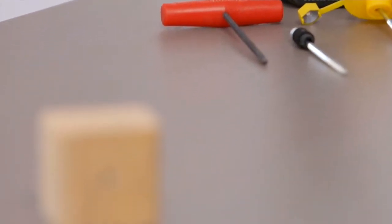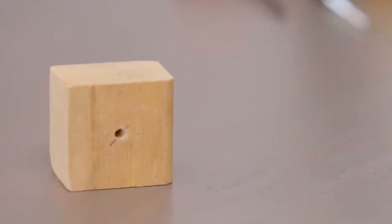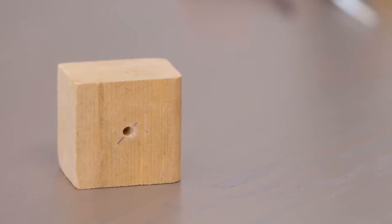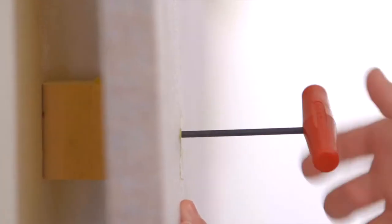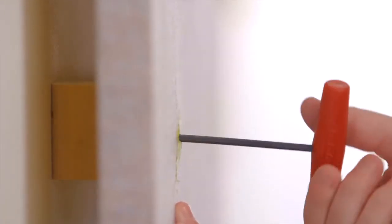This standoff is made from a 2x2x1.5 inch wooden block with an 1.8 inch hole drilled in the center. This will give us a 1.5 inch space between the panel and the wall.